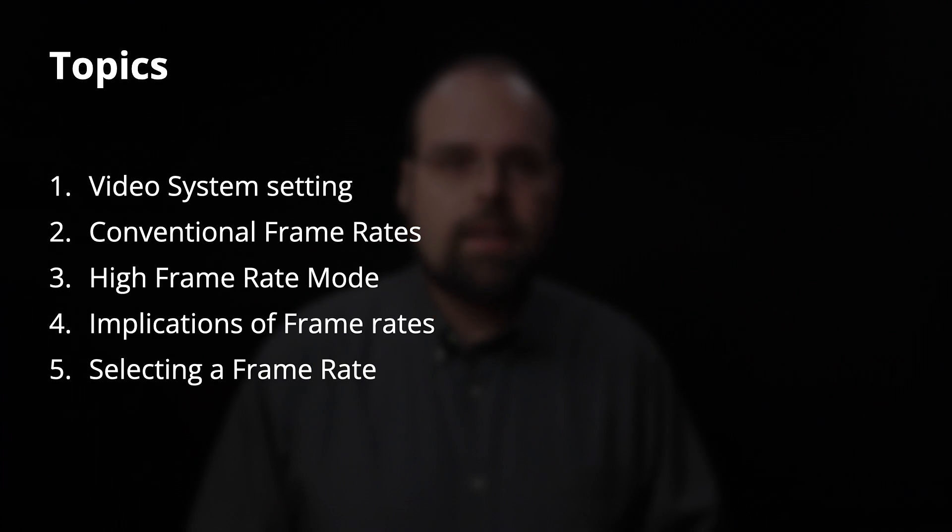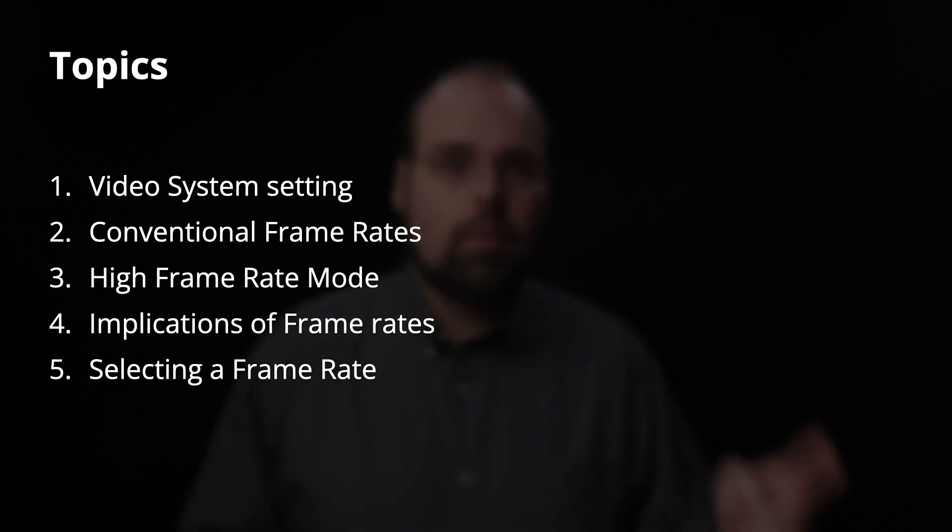In the course of this video, I'm going to be talking in both hybrid camera and cinema camera terms. Canon has used slightly different nomenclature for things in the Cinema EOS OS versus the photo OS. I'll be covering about five broad topics: the video system setting, conventional frame rates, high frame rate mode briefly, the implications of different frame rates on your video, and the mechanical process of selecting the frame rate on your camera.